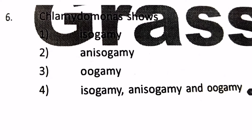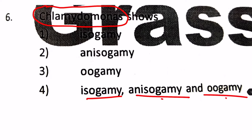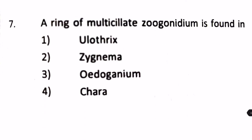Chlamydomonas shows which type of reproduction? Options are: Isogamy, Anisogamy, Oogamy, or all three. Chlamydomonas is a species from Chlorophyta which shows, as part of the evolution of sex in algae, all types: Isogamy, Anisogamy, and Oogamy. So the answer is actually number 4.